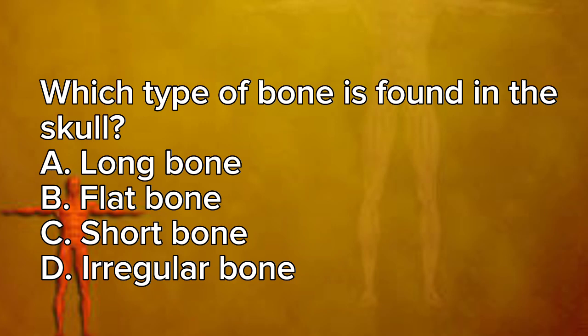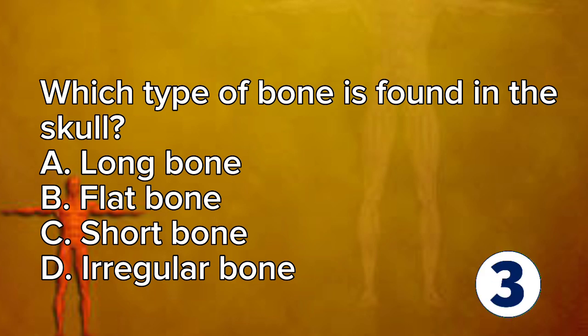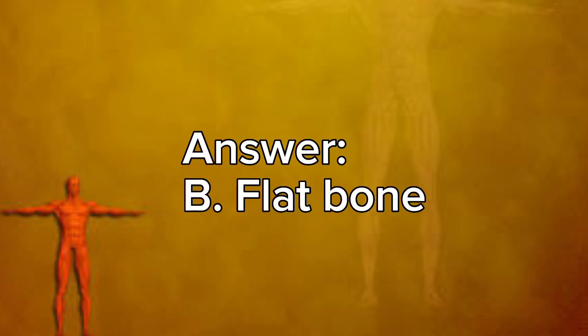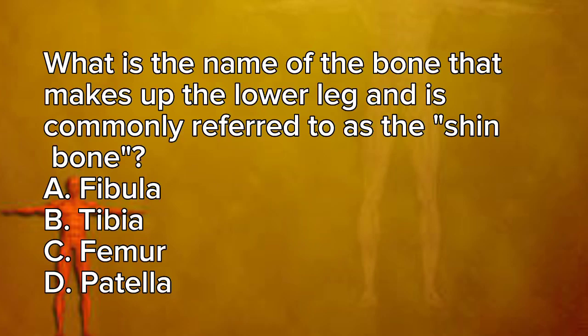Which type of bone is found in the skull? A. Long Bone. B. Flat Bone. C. Short Bone. D. Irregular Bone. Answer: B. Flat Bone.